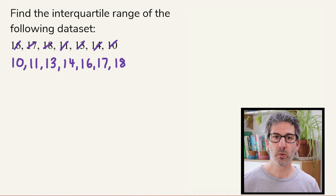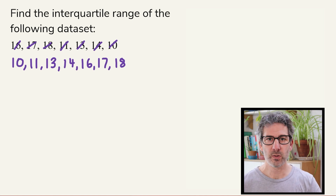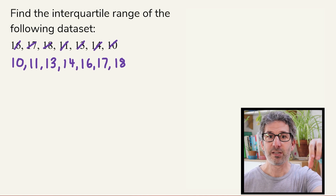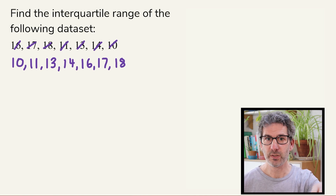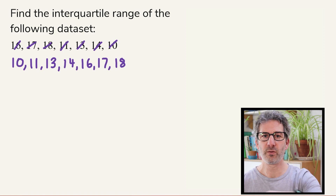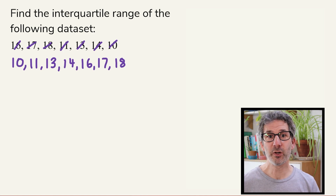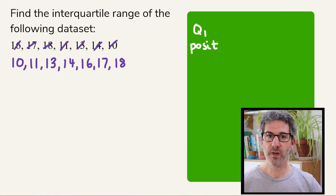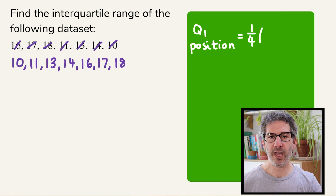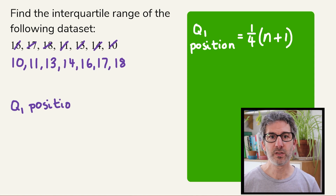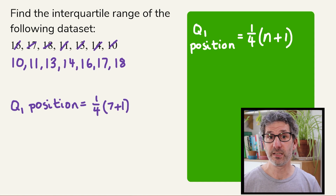We need to find the lower quartile, or first quartile, and the upper quartile, or third quartile, in order to find the interquartile range. Just as the median is the value halfway through your data set, the lower quartile is a quarter of the way through, and the upper quartile is three quarters of the way through. There's a formula for the position of the first quartile: it's a quarter of (n + 1), where n is the number of values. With seven values, that's a quarter of 8, which is 2.